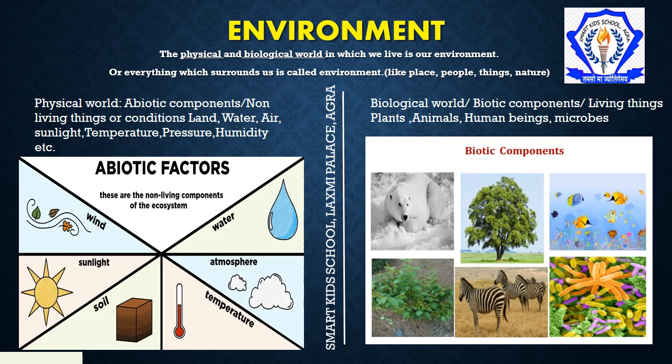First is biotic components, meaning living things, which includes plants, animals, human beings, microbes, etc. And the second is abiotic components, meaning non-living things or conditions, which includes land, water, air, sunlight, soil, etc.